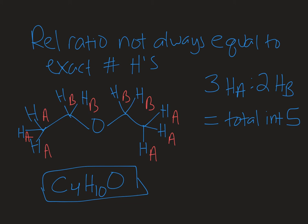If the total integration comes out to be only 5, but I have 10 protons, then that tells me I need to multiply by 2. And having few signals, but lots of protons tells me that I have symmetry in the molecule.